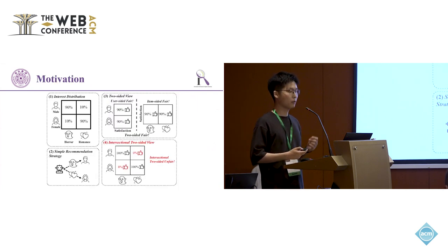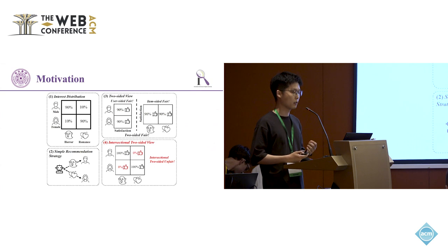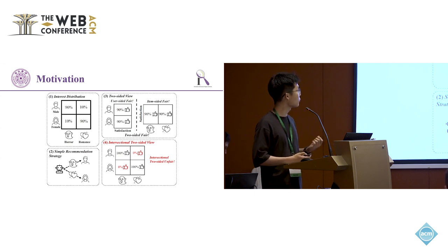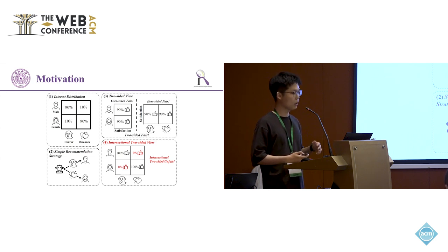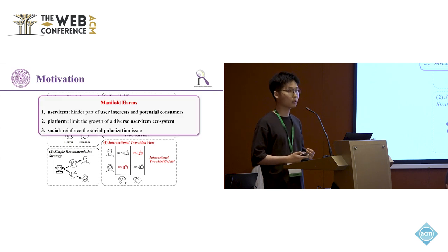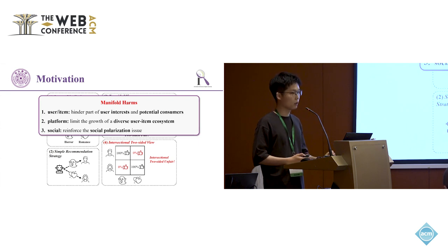However, we argue that even if a recommendation system satisfies two-sided fairness, there may exist a nuanced form of unfairness: intersectional two-sided unfairness. Here we present an example to illustrate this concept. In this example, we can observe fair results on both user and item sides. However, some interests at the intersection of user group and item group — which we call intersectional two-sided groups — receive discrimination, such as female's interest in horror movies. Such discrimination has several harms: for users and items, it hinders part of user interest and potential consumers; for the platform, it may limit the growth of a diverse user-item ecosystem; and for society, it may reinforce the social polarization issue.